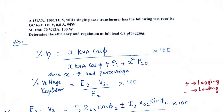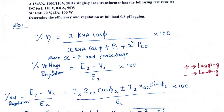In the short circuit test, we got 70 volts, 12 amperes, and 100 watts. Determine the efficiency and voltage regulation at full load at a 0.8 power factor lagging. This is what is given in the question.